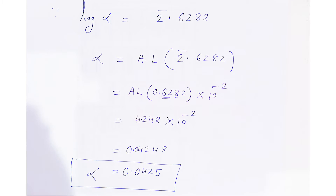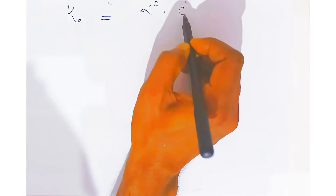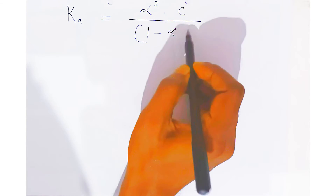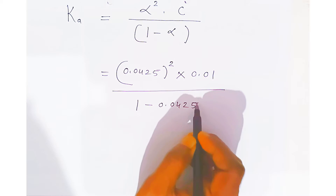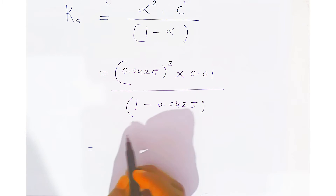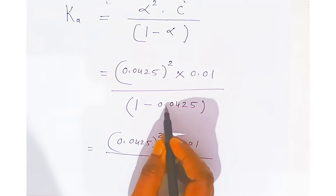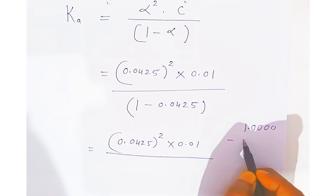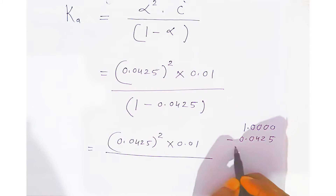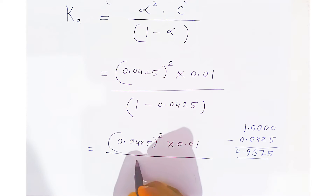Once you got the degree of dissociation, this is the first answer. Now the dissociation constant Ka is nothing but alpha squared into C upon 1 minus alpha. Putting in the values: Ka equals (0.0425)² into 0.01 divided by 1 minus 0.0425. When you subtract: 1 minus 0.0425 equals 0.9575. So you have to divide by 0.9575.